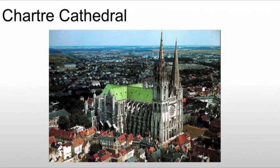The landscape can also be altered simply by the addition of a building. In the case of a cathedral, the landscape for 20 to 30 miles around is altered because if you're heading into the town, you can't help but see the cathedral from a great distance.